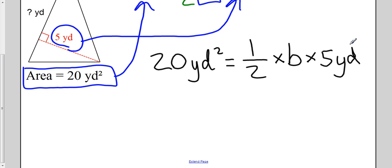Okay, so what I have to do is I have to try to get B alone on the right hand side here. So on the right hand side I have half times B times five, and I can get rid of some of these things on the right hand side by using inverse operations. I have multiplication by five here.